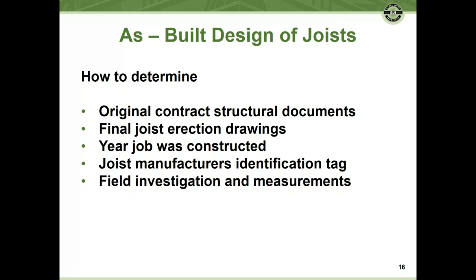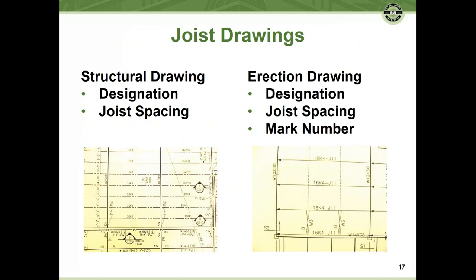The difference between a structural plan and an erection plan is that the structural plan has the designation — for example, 20K4 or 16K3 — along with joist spacing. On the erection plan there is also the designation, the joist spacing, and importantly, the joist mark number. That mark number identifies each unique piece so similar pieces have different mark numbers, allowing the joist manufacturer to track their calculations accordingly.